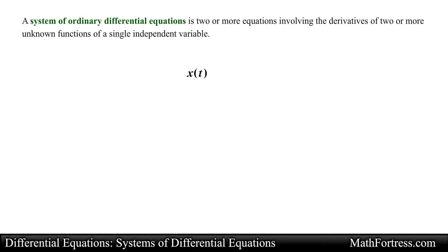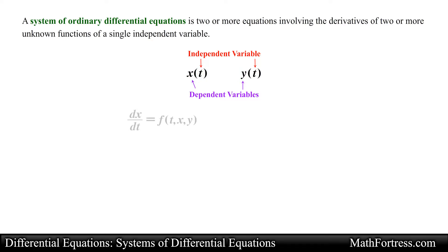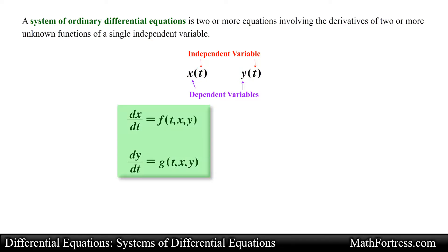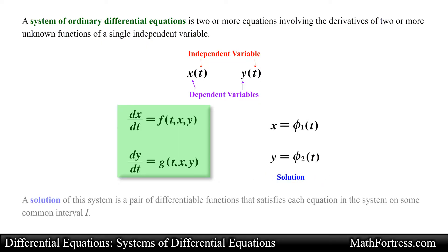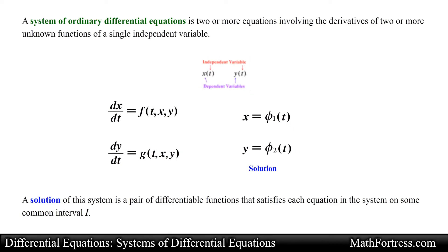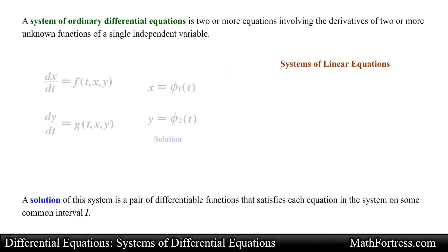For example, if x of t and y of t denote dependent variables and t denotes the independent variable, then a system of two first order differential equations is given by the following expressions. A solution of this system is a pair of differentiable functions that satisfies each equation in the system on some common interval i. This is analogous to systems of linear equations from your studies of algebra.